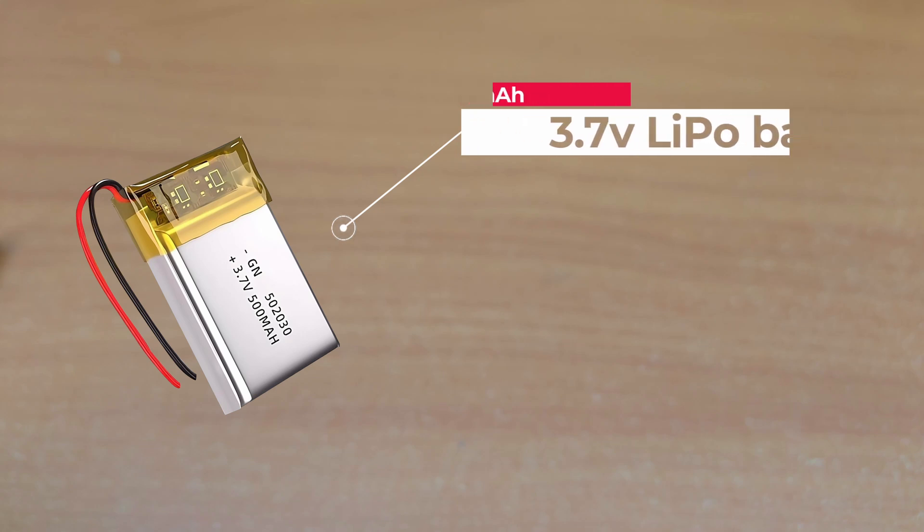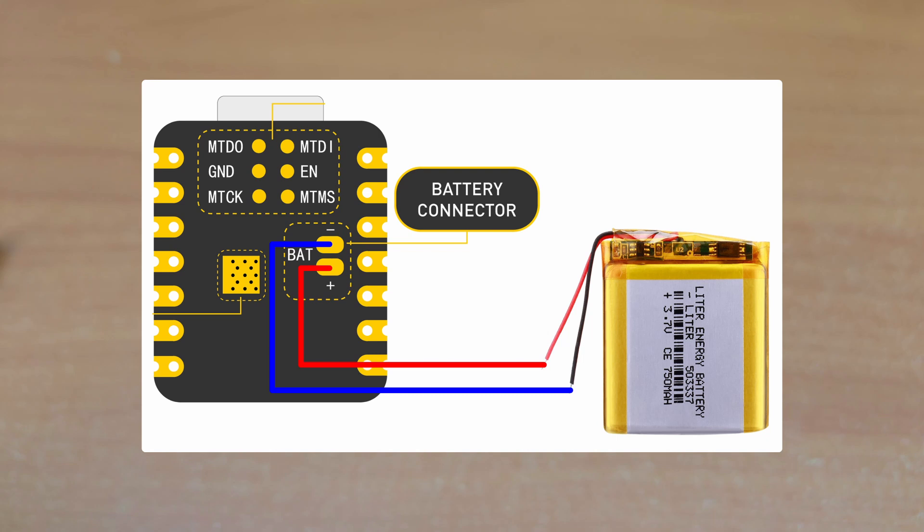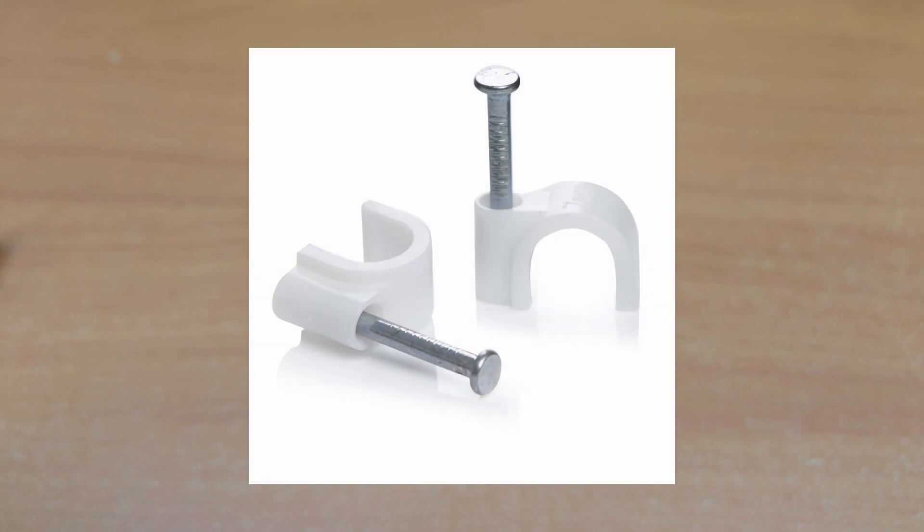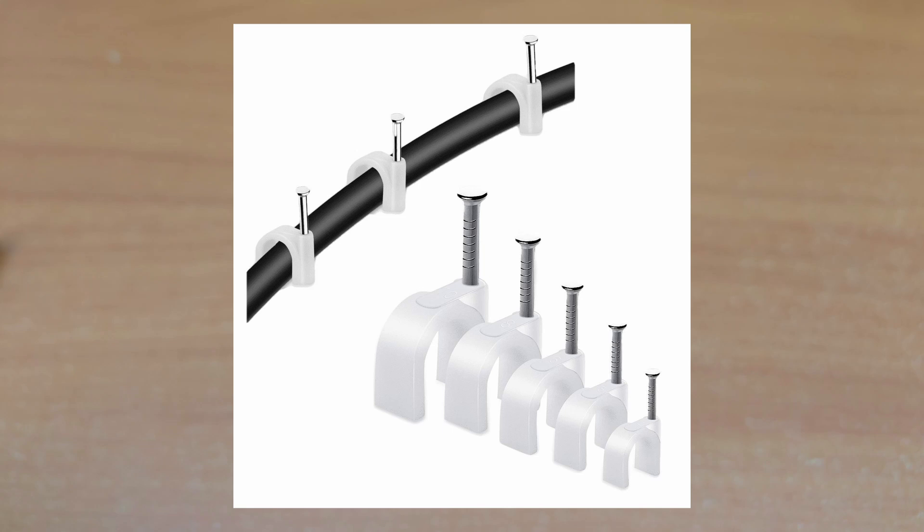The Xiao ESP board has an inbuilt battery management circuit, so the battery can be soldered right onto the board and we don't need extra circuitry for that. I will be using these small clamps to fasten the motors to the box. These are normally used to clamp wires onto walls, but they're also perfect for these motors.